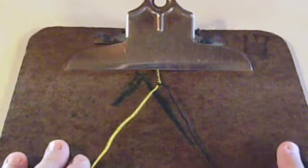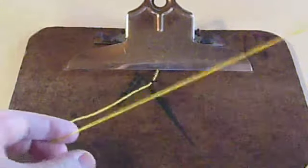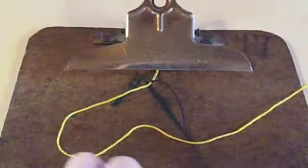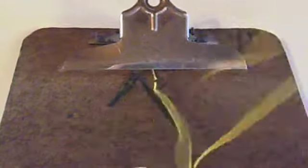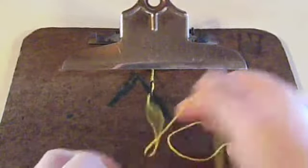Okay, so it is super simple. All you have to do is with your first string, you make a forward knot. Like so. Then you just pull it tight.